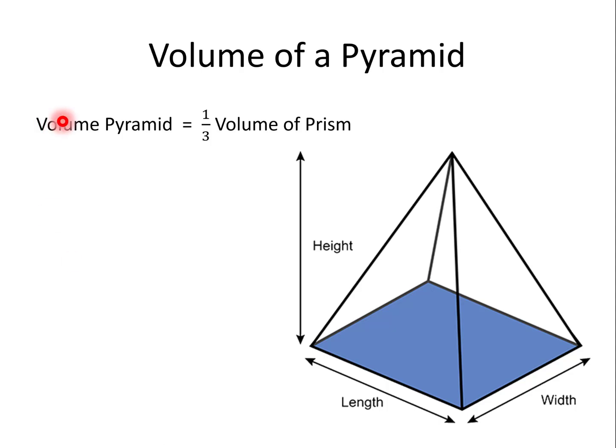Volume of a pyramid. The volume of a pyramid is one-third the volume of a prism. That means it's one-third the area of the base times height. Area of the base times height being the volume of the prism.